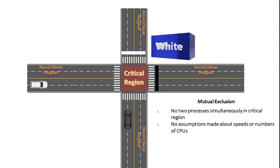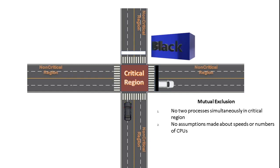The black car comes to the critical region first, but the board is initially white, so it cannot enter the critical region. The white car arrives and since the board is white, it can enter the critical region. As soon as it gets out, it changes the board to black, and now the black car can enter its critical region.